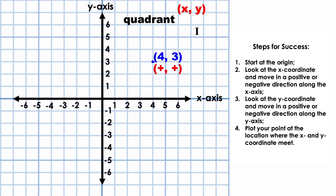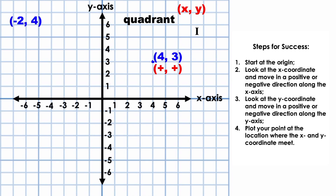Pause the video and take a moment to plot the next point. How did you do? Let's take a look. To plot the point negative 2, 4, we start at the origin and we look at our x-coordinate: negative 2. So we're going to move negative 2 places along the x-axis. We then look at the y-coordinate, which is positive 4, so we're going to move 4 places in a positive direction on the y-axis. And our point is going to be right here — negative 2, 4.